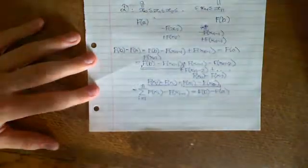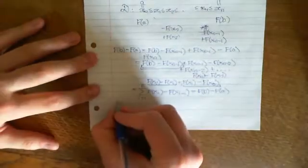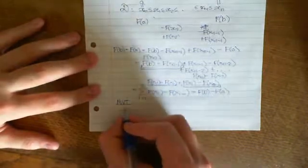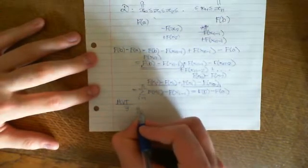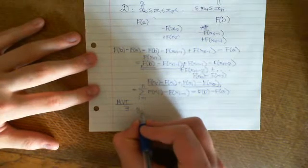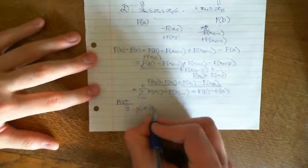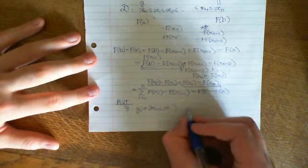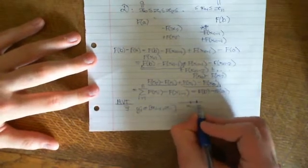So now we apply the mean value theorem, because the mean value theorem told us that there exists, we'll call it a yᵢ, which is an element of [xᵢ₋₁, xᵢ]. All I'm doing is taking one of these bits of these dissections, xᵢ₋₁...